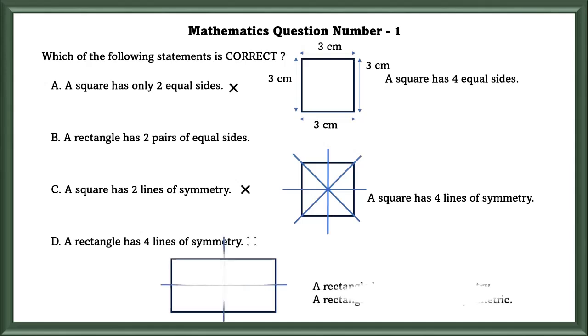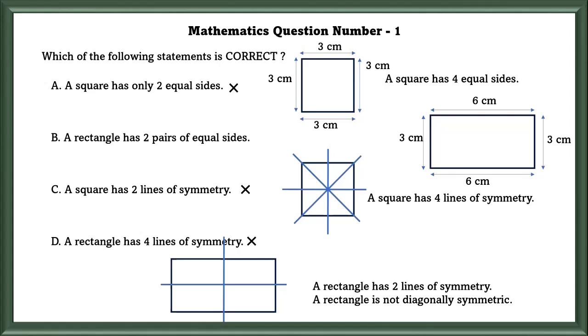Option D: A rectangle has 4 lines of symmetry. Wrong. A rectangle has only 2 lines of symmetry. A rectangle is not diagonally symmetrical. Option B: A rectangle has 2 pairs of equal sides. Yes, a rectangle has 2 pairs of equal sides.